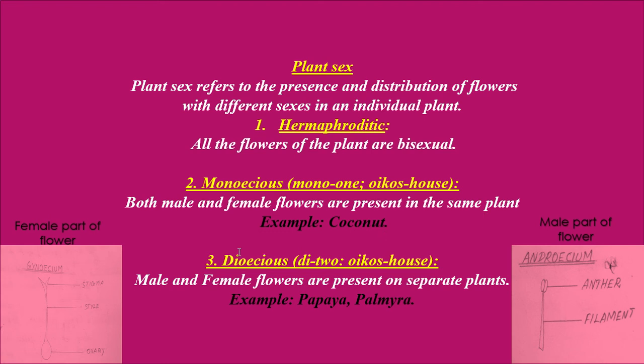The next type is dioecious. Male and female flowers are present on separate plants. In this case, the male flower is present in one plant of the same species and the female flower is present in a separate plant of the same species. This distribution of flowers in plants is called dioecious. Examples: papaya and palmyra.